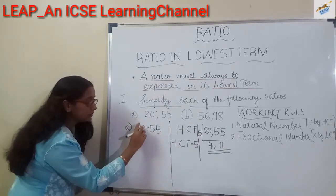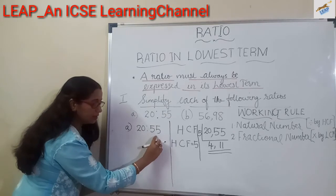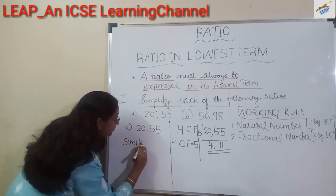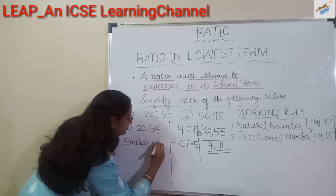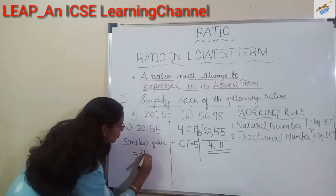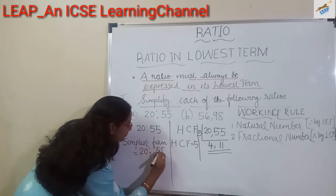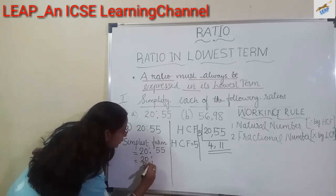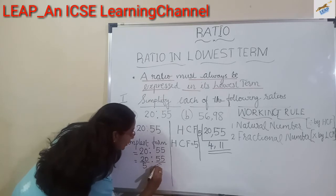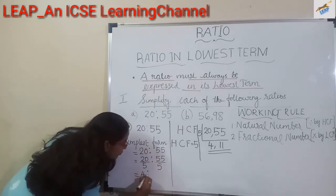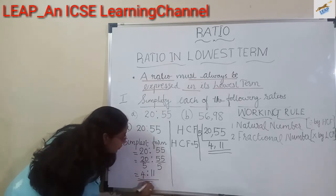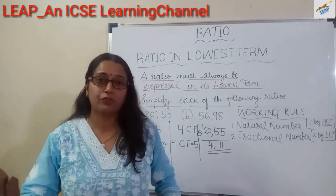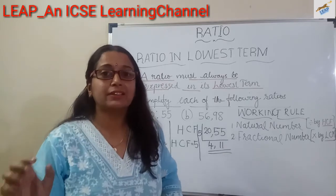Now we divide each term of the ratio by the HCF. Simplest form: 20 is to 55 becomes 20 divided by 5, is to 55 divided by 5, which gives us 4 is to 11. A ratio A is to B is said to be in its simplest form when each term has no common factor other than 1.